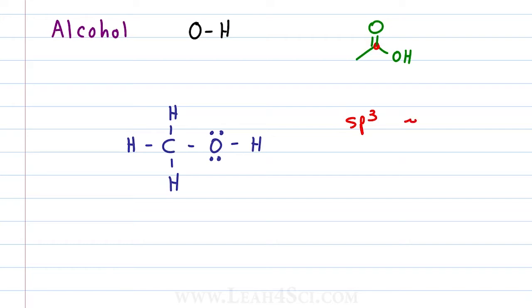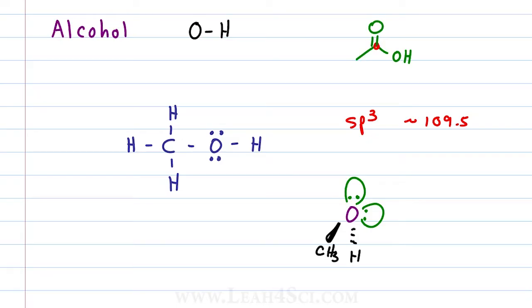With a bond angle of approximately 109.5°, but it's slightly smaller. If we look at this alcohol as a 3D structure, we'll have the two lone pairs in the plane of the page, the CH3 coming out of the page and the hydrogen going into the page. The electron density is greater at the lone pairs compared to the two electrons that make up a bond between oxygen-carbon or oxygen-hydrogen, and that means these electrons are bulging out, pushing slightly on the carbon and hydrogen, bringing them closer together for a bond angle that is slightly less than 109.5°.